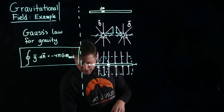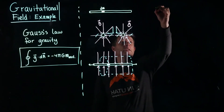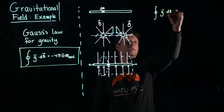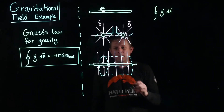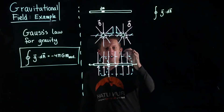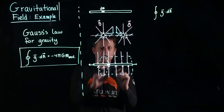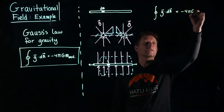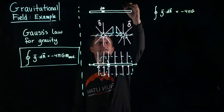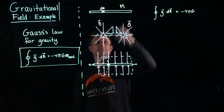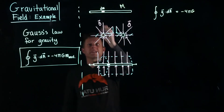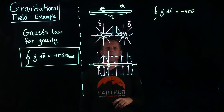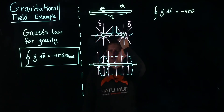Now we can do the integral. It's a closed surface integral of the gravitational field dotted with the area element — that's the surface element. We're looking at small surface area elements on this cylinder, and that equals the constants on the right-hand side. Let's say this object has a total mass m.